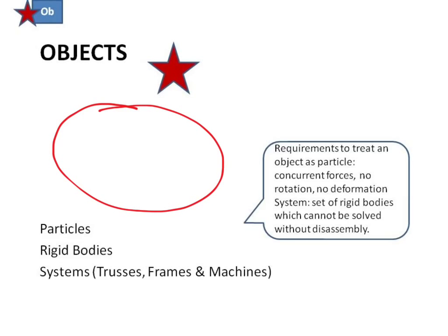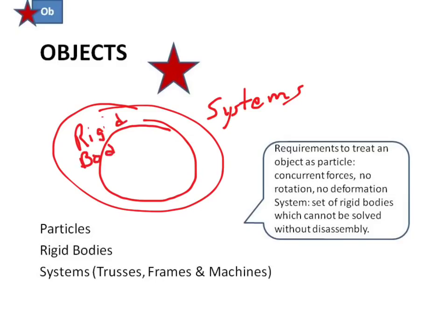Now remember, systems is the huge overview that includes everything else. A rigid body is just a special case of a system. A rigid body is only one object.